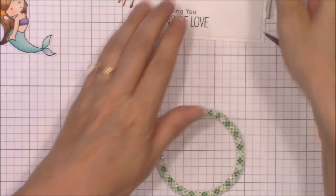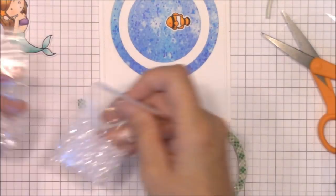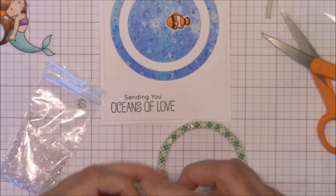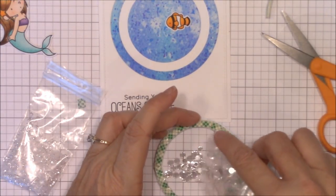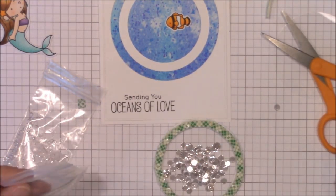Now I'm adhering the clownfish onto the center circle with some tape runner. You can fill your shaker pocket with anything you like. I wanted to keep this pretty simple, so I added some sparkling clear confetti and some three millimeter sparkling clear sequins.